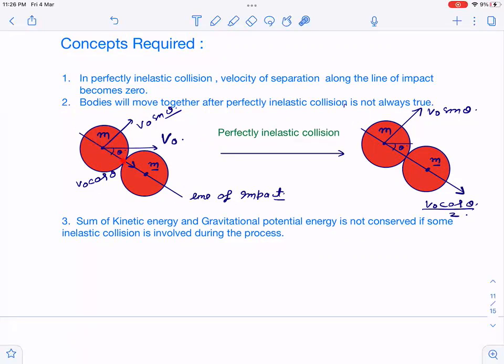For this perfectly inelastic collision, we can conserve momentum along this line for the system. Initial momentum: m v₀ cos theta. After collision, both have the same velocity v₁ along the line of impact, so 2m v₁. Therefore v₁ equals v₀ cos theta divided by 2. What's the conclusion? After collision, this ball will have velocity v₁ in this direction and velocity v₀ sin theta perpendicular. These two balls won't move together after collision.